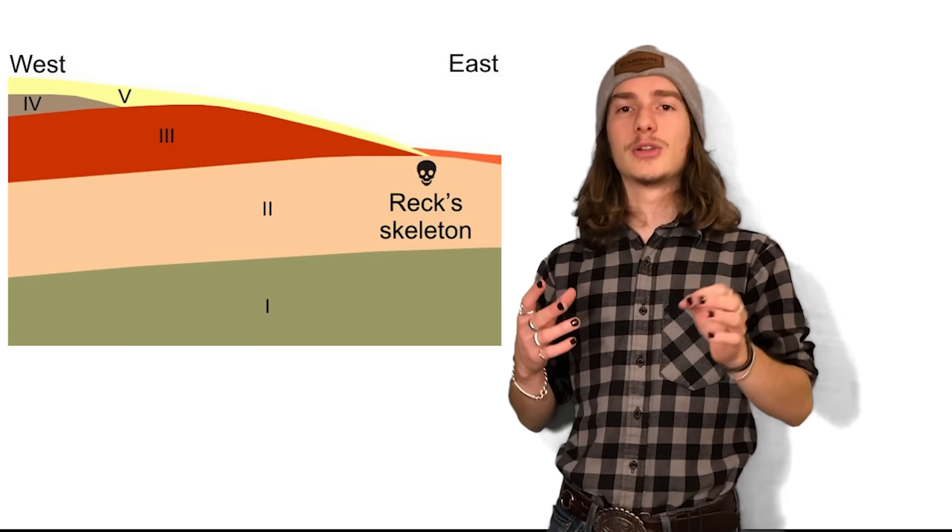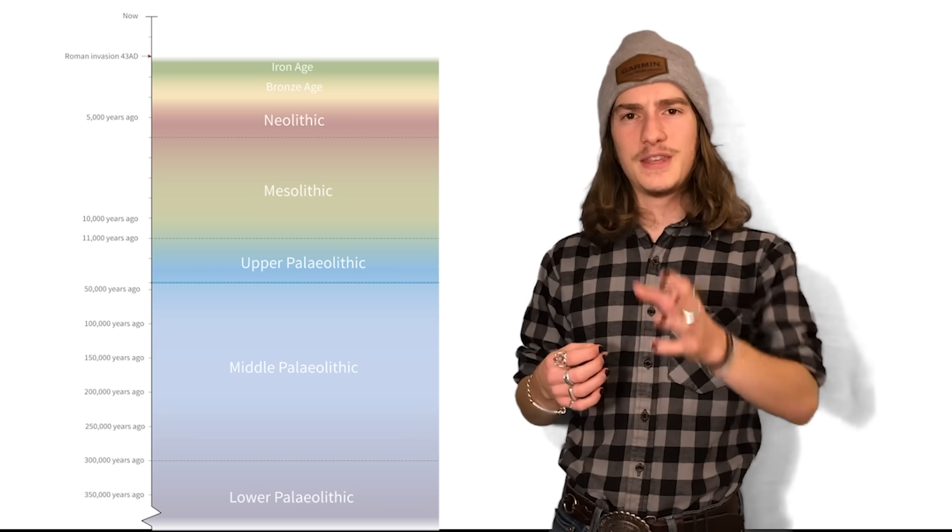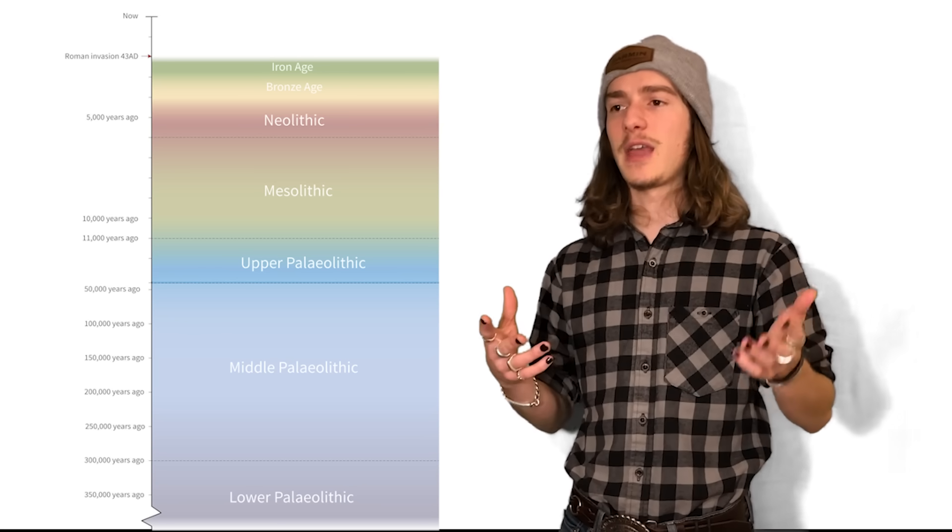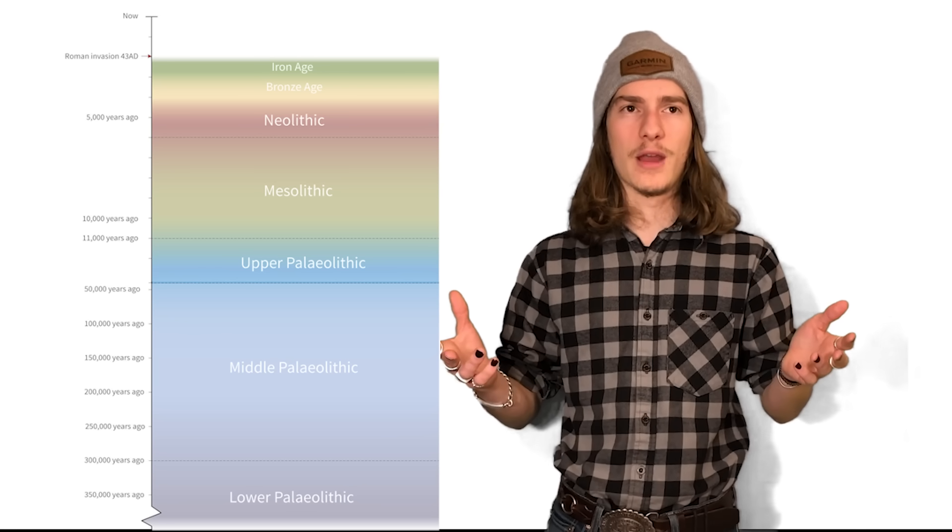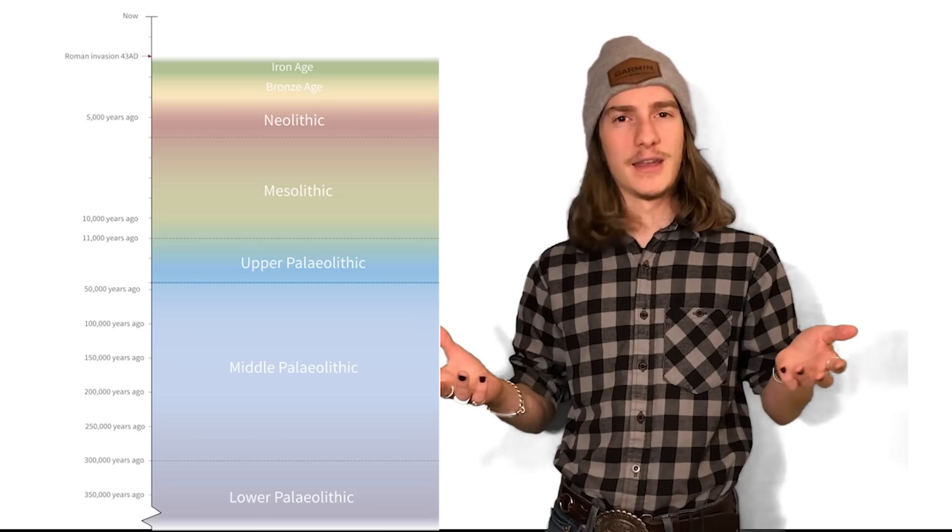All of this evidence led the team to the conclusion that the remains were probably more likely around 20,000 years old. This date pointing to the middle of the Paleolithic era would be far more likely than for a fully articulated Homo sapien skeleton to be found in a middle Pleistocene bed.